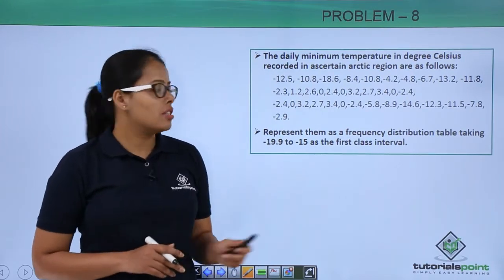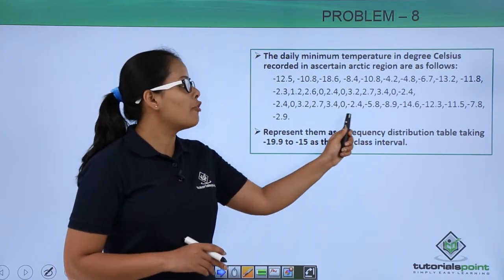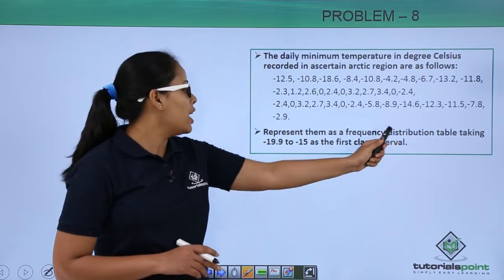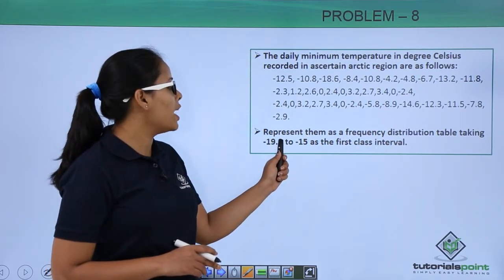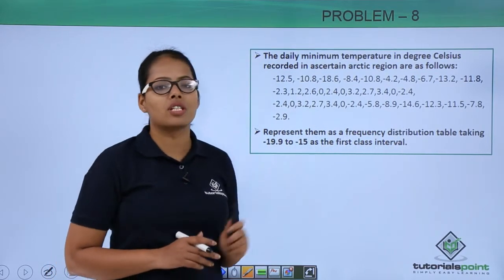Using these observations, you need to represent them as a frequency distribution table, taking -19.9 to -15 as the first class interval.